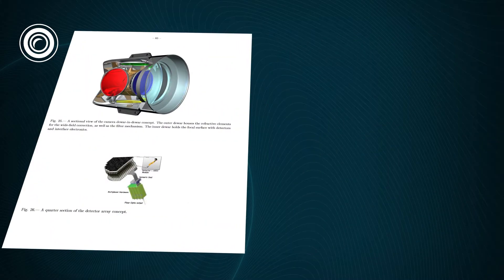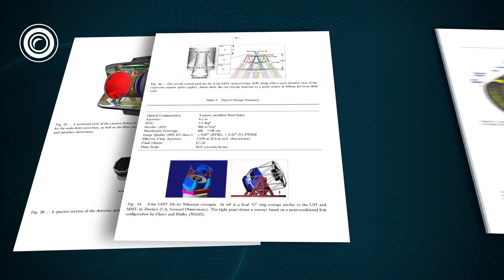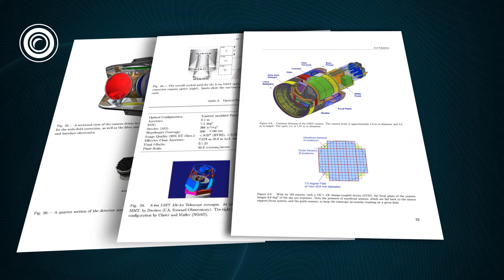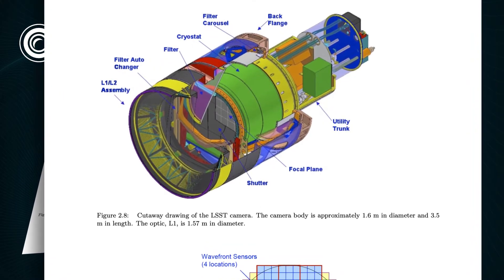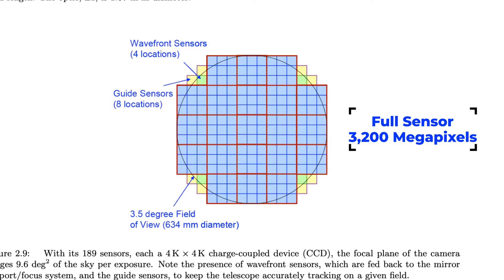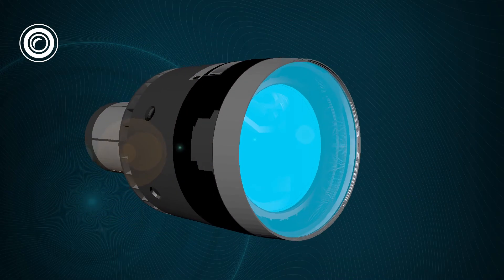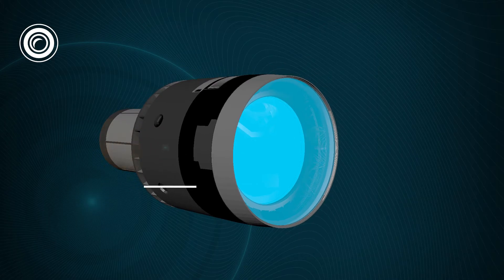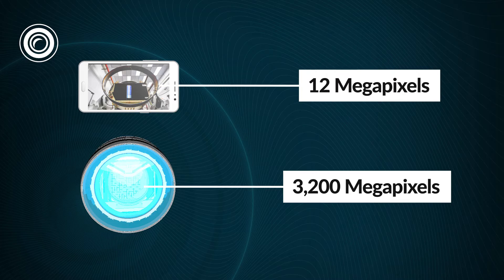The centerpiece of the telescope would be its camera module. In the early 2010s, after all their preparation, SLAC researchers and their collaborators in the US and in Europe began prototyping the camera. The camera was designed with a sensor of 3,200 megapixels, making it the largest camera ever built for astronomy. For comparison, the smartphone you might be watching this on right now probably has around 12 megapixels.